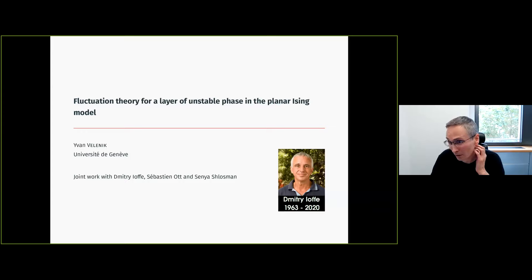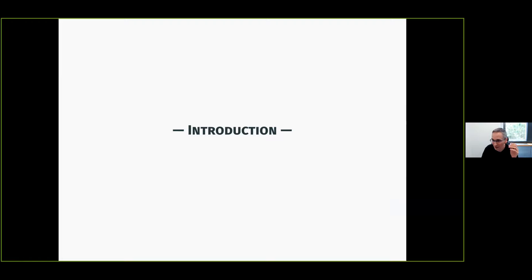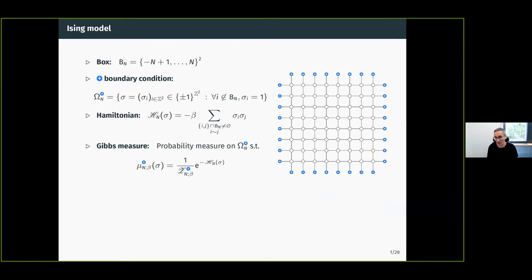My talk is about the planar Ising model. I guess that all of you are pretty familiar with it, so I will very briefly introduce it basically to fix my notations. I will always work on the lattice Z² with nearest neighbor interactions, and mostly I will be working in a finite box B_N which is just a square of side length 2N.